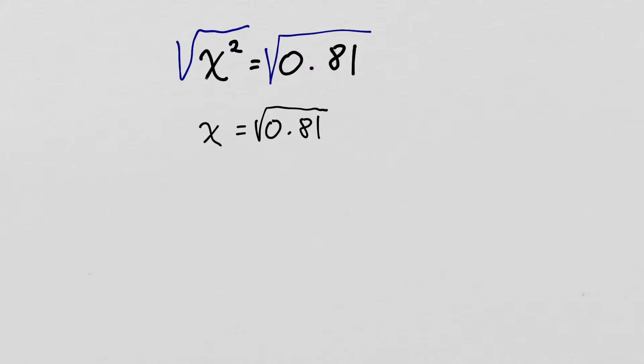Don't forget your square root. Now this may look complicated. If you have a calculator, feel free to type it in, the square root of 0.81, and you'd be done. But if you don't have a calculator, you don't need to sit there guessing.